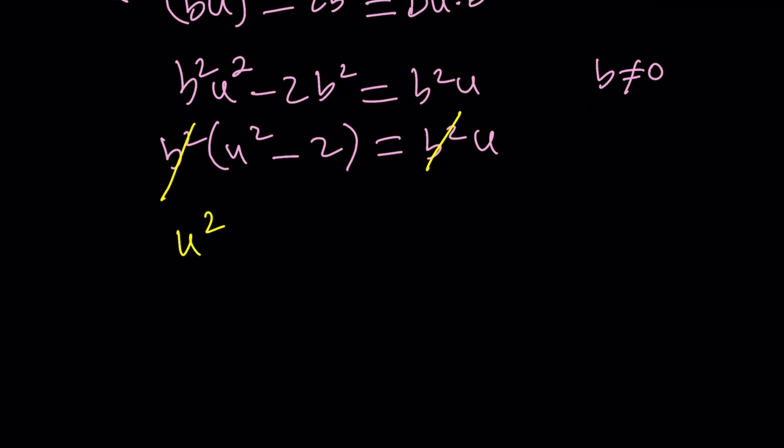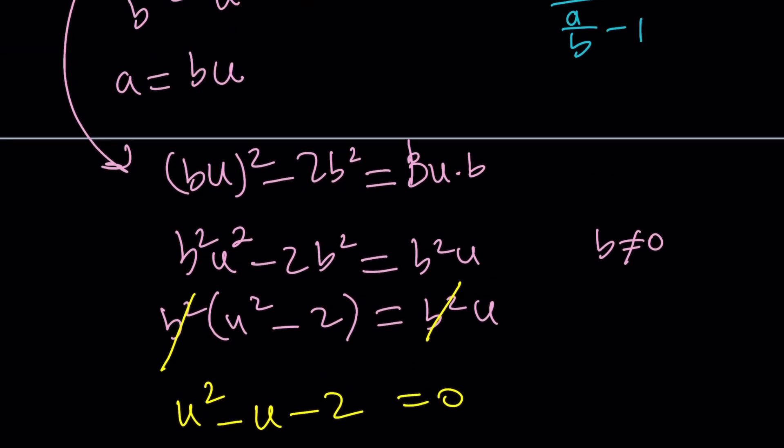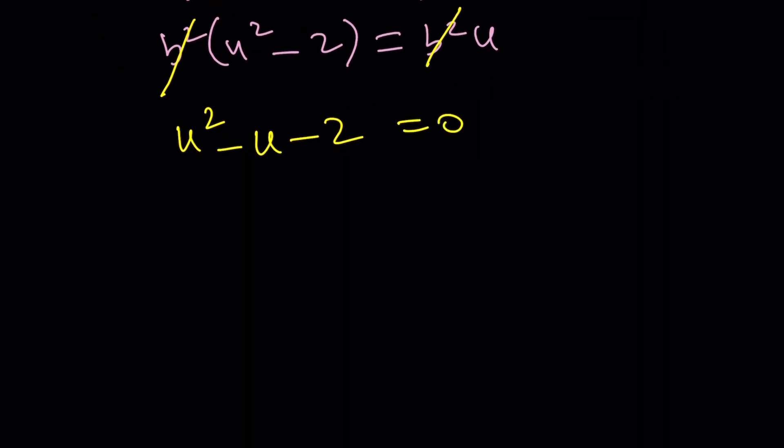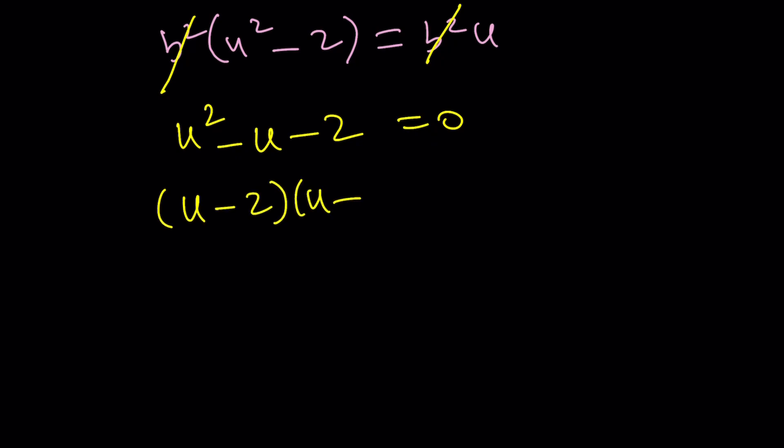We can now cancel out the b squared. This gives us u squared minus u minus 2 equals 0. Now you've got to remember, u is a over b, and that's what I'm trying to find. Then I'm going to use it here. This is an easy quadratic and we can just solve it. u minus 2, u plus 1 equals 0. u equals 2 or u equals negative 1.